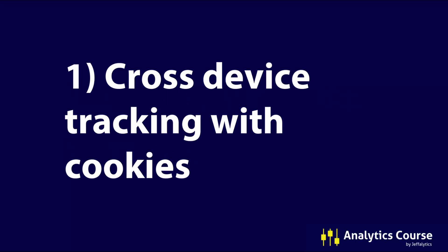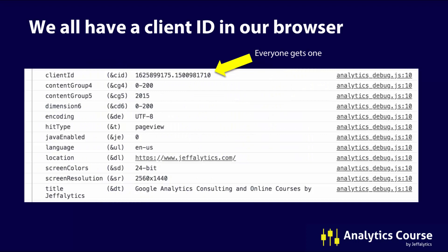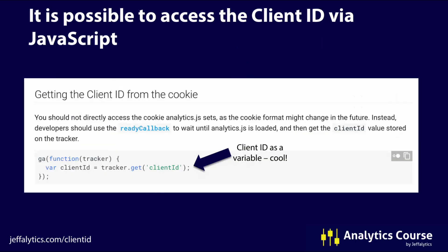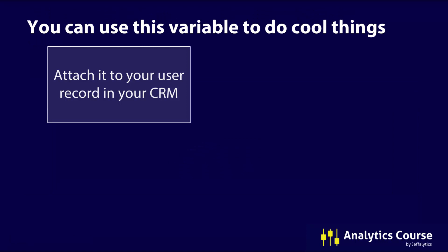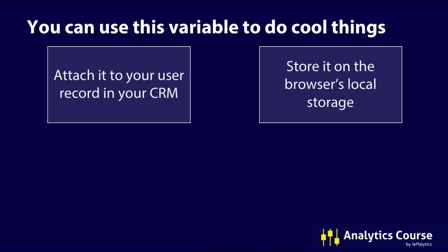Let's start with cross-device tracking with cookies. Remember the client ID — we all have this client ID in our browser. Did you know that it's actually possible to access the client ID via JavaScript? At any point in time, somebody can write a function that calls upon Google Analytics and says, tell me the client ID for this person. You can use it as a variable, pull it into your browser memory, send data into your systems or into Google Analytics. What you can do is attach it to the user record in your CRM, or store it on your browser's local storage so you're not relying on cookies at all.